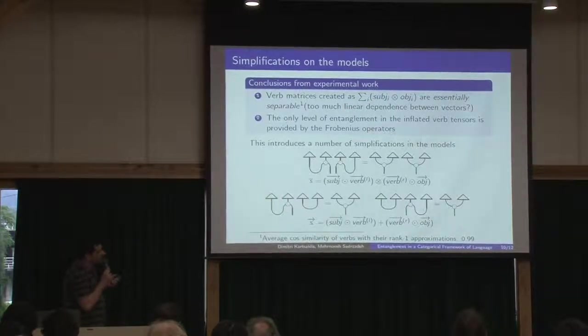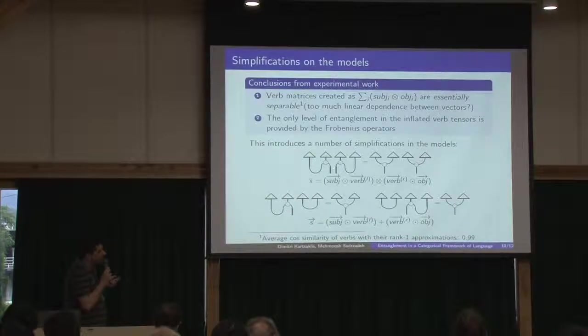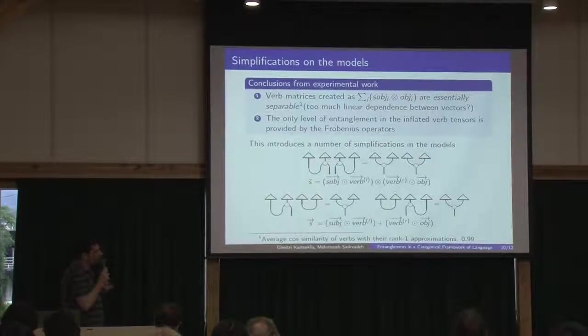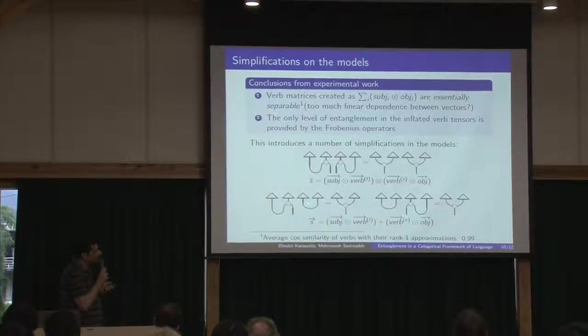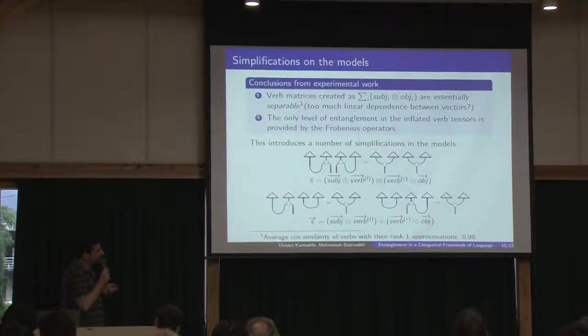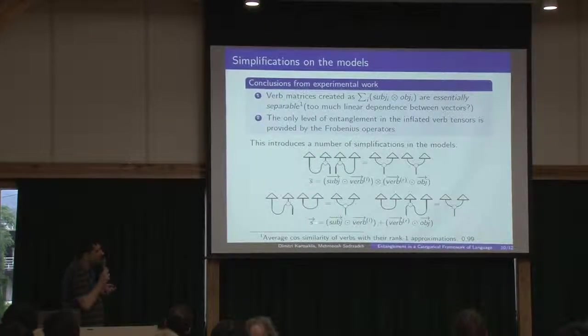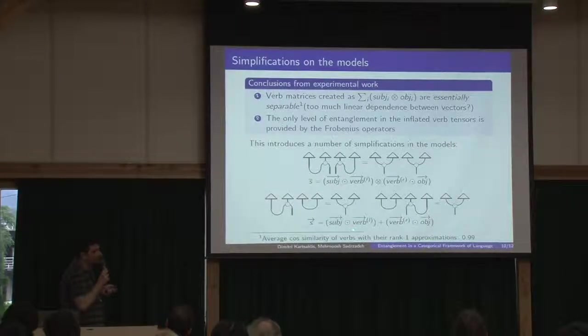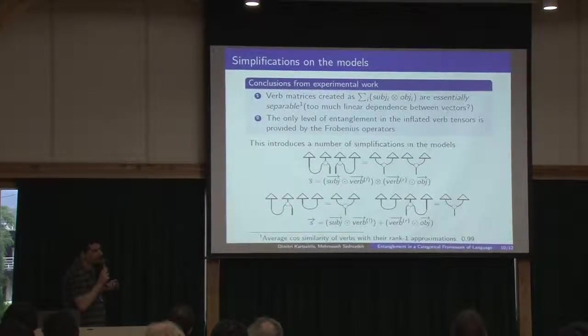But in any case, what we saw is that there are a number of simplifications to our models. So for example, these interactions here are cancelled out as you can see. And the equation for the Frobenius additive model is much simpler than the one we had in mind.